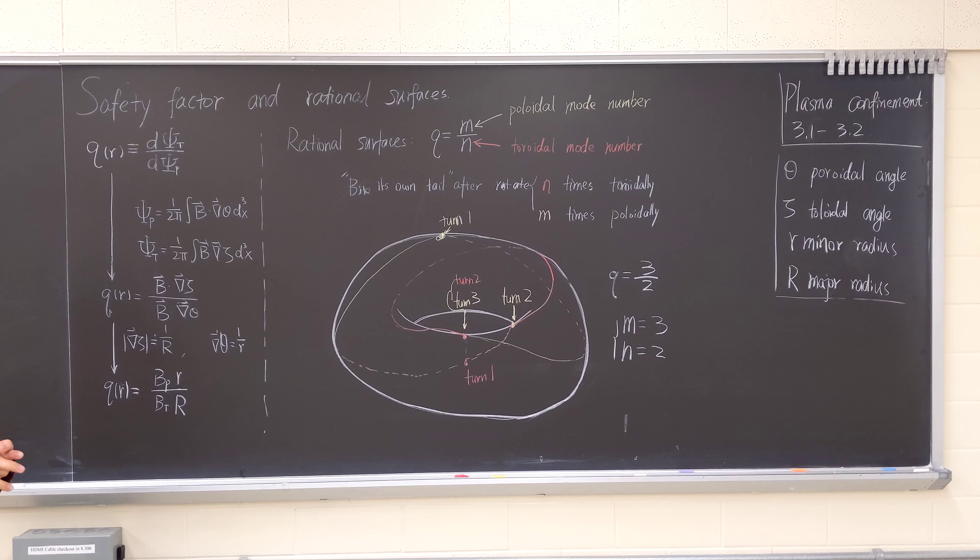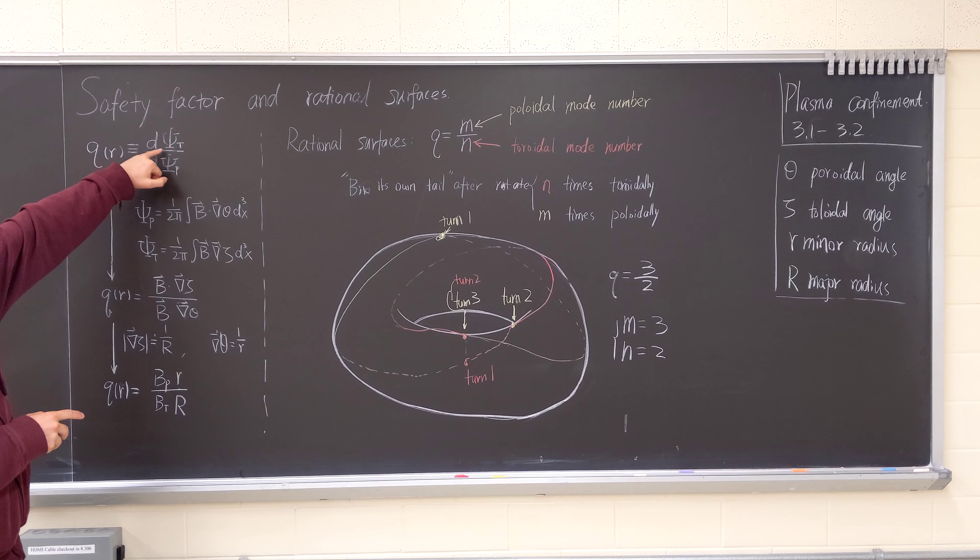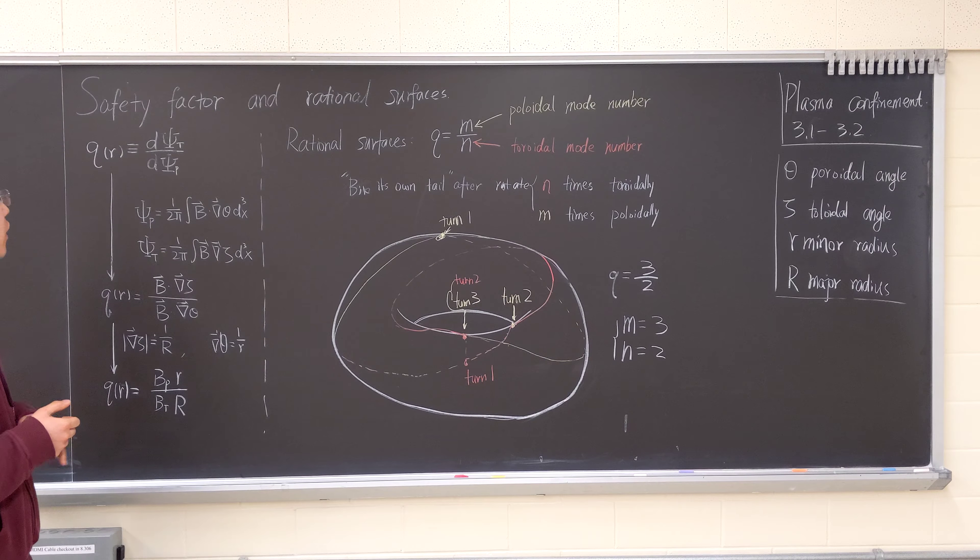From the formal definition of the safety factor, this is the toroidal flux and the poloidal flux, d psi t over d psi p.